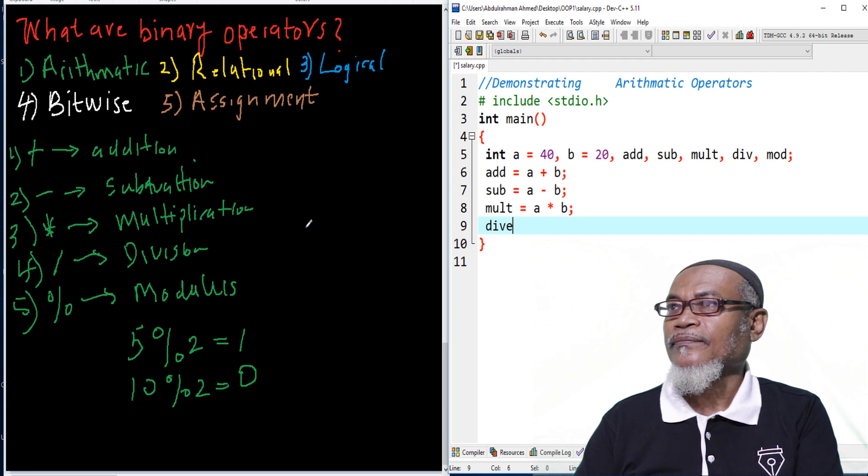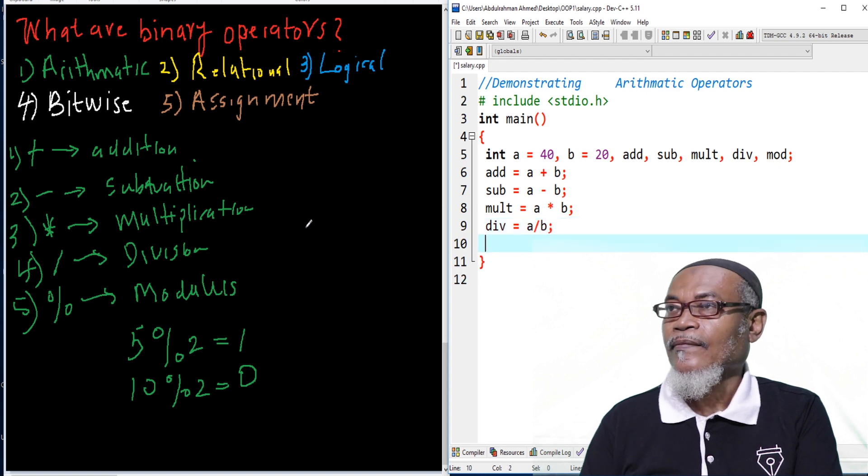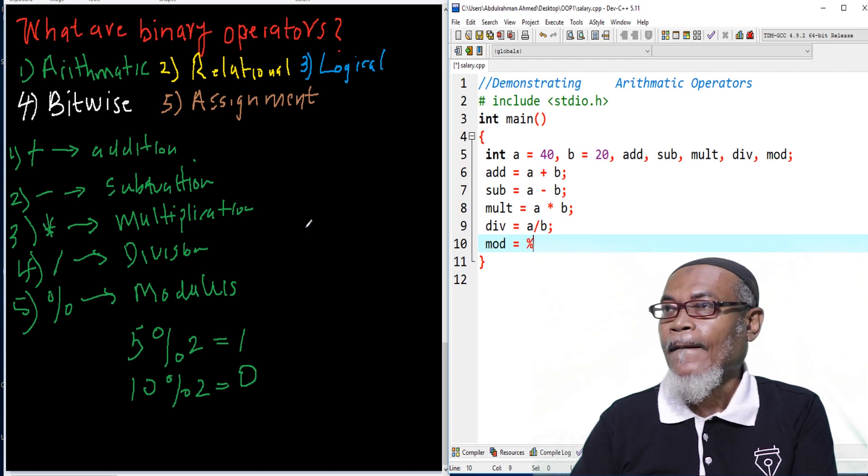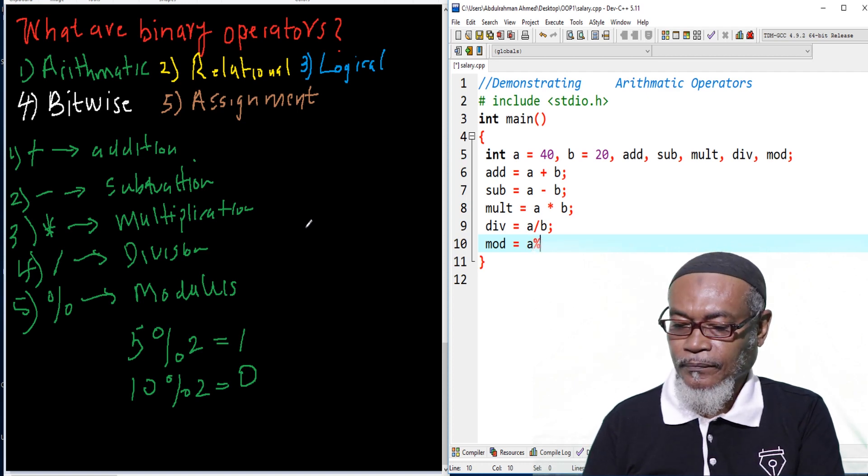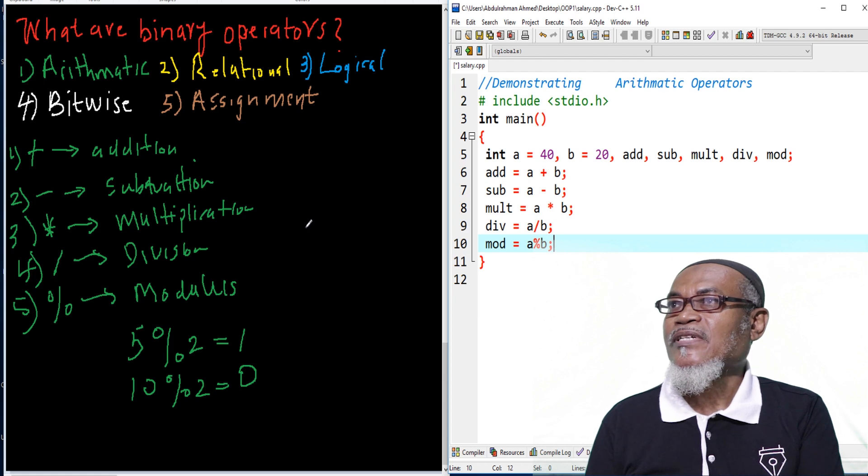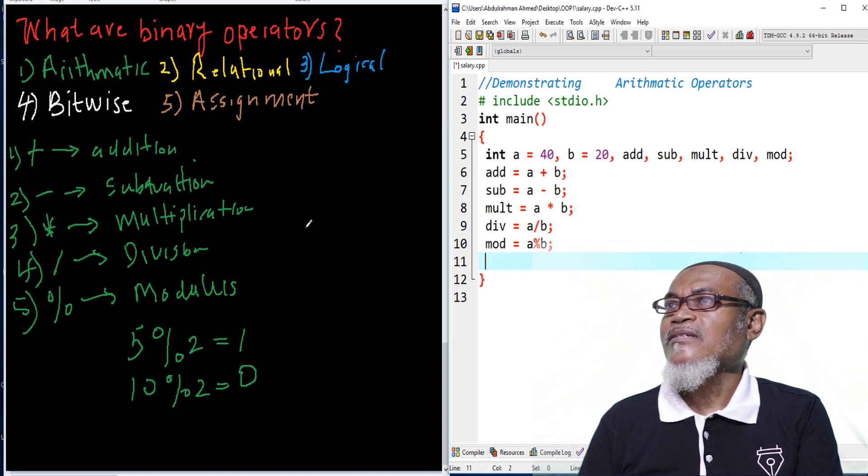And then, for div, will be A divided by B. And then, for modulus, we'll give it A modulus B. That is how we have done it. We have tried the five of them, and see what will be the result out of that.